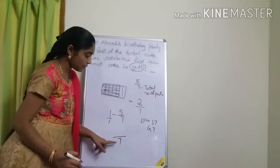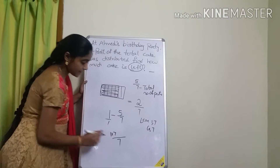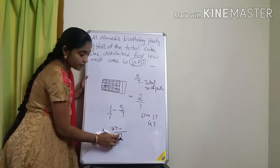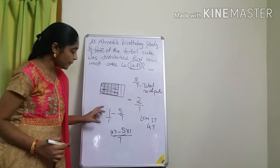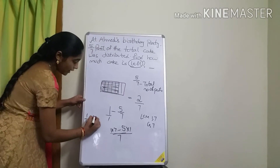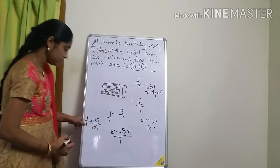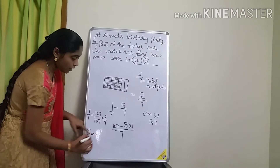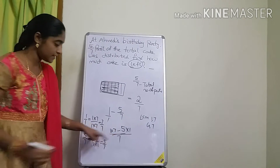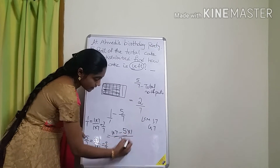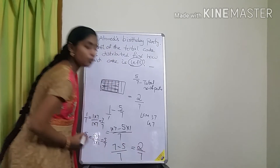1/1: multiply numerator and denominator by 7 to get 7/7. For 5/7: multiply by 1, giving 5/7. Now: 7/7 minus 5/7. Denominators are the same, so subtract the numerators: 7 minus 5 equals 2. The denominator stays as 7. The answer is 2/7.